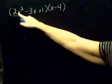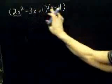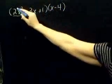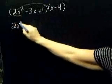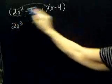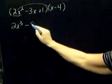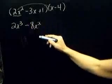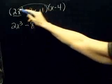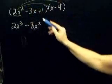Let's start with the 2x squared. So 2x squared times x would be 2x to the third, and 2x squared times negative 4 would be minus 8x squared. Okay, I'm done distributing the 2x squared.